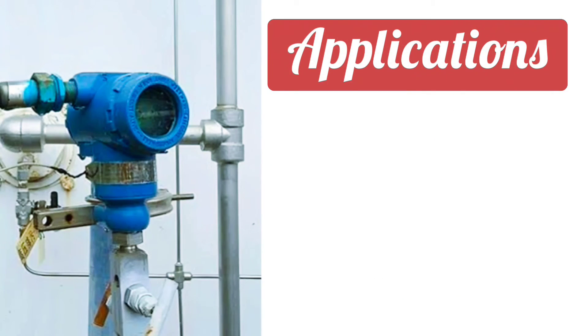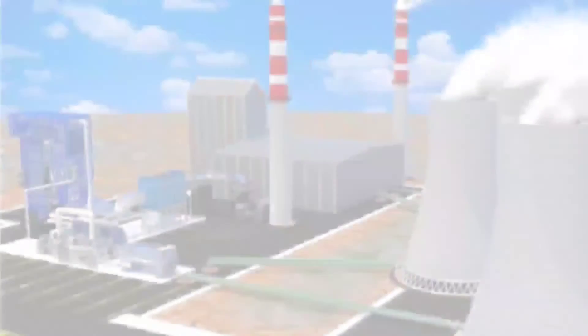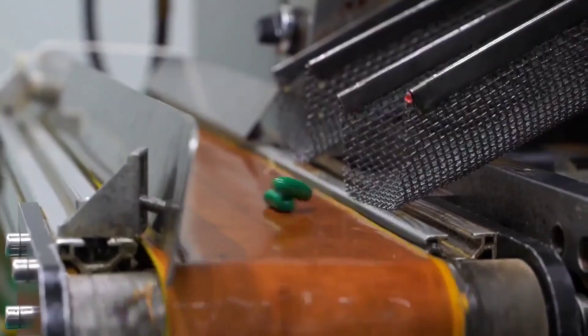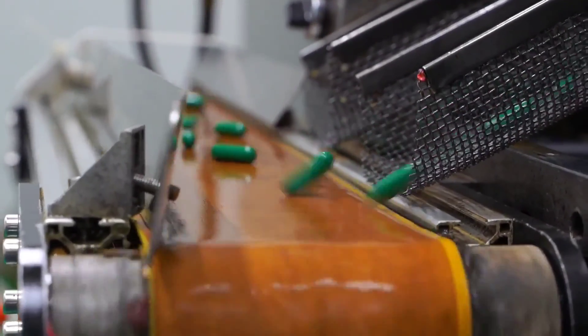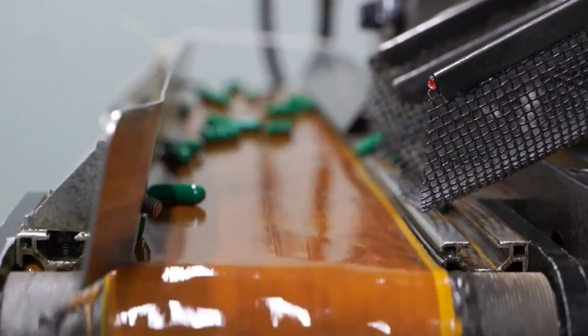If we talk about its applications, it is used for pressure monitoring in industrial applications such as chemical plants, power plants, or manufacturing units, and many other industries use pressure transmitters.